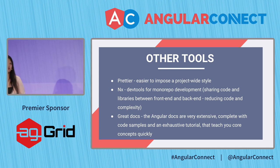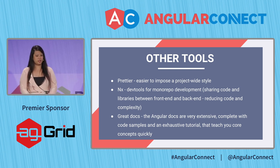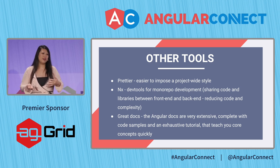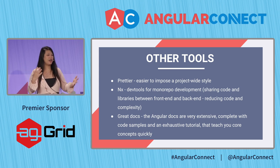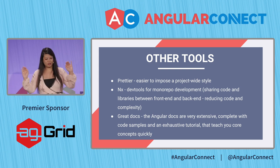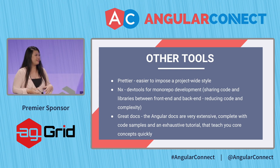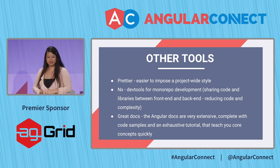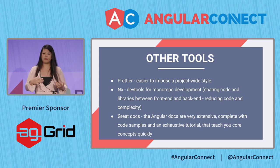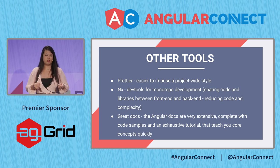Other really amazing things that can help enable your team include things like Prettier. With Prettier, if someone gets onboarded on the team, you're not constantly thinking double quotes or single quotes, spaces or tabs — there is a convention, and that's it. No more conversation. NX as well is really amazing. These are dev tools for monorepo development that allow you to share code and libraries between front-end and back-end really easily, reducing the amount of code and complexity.